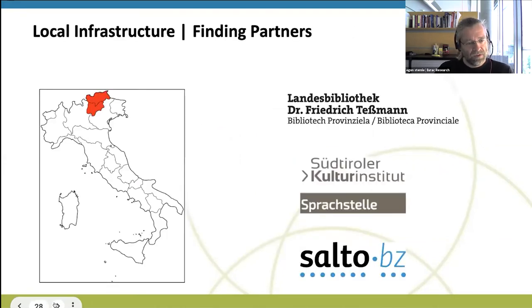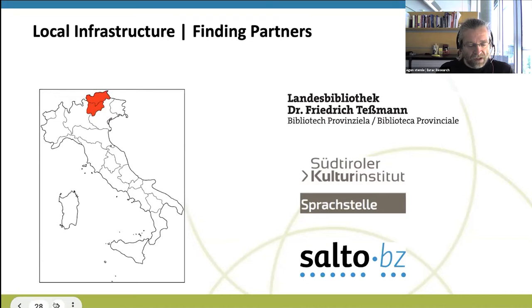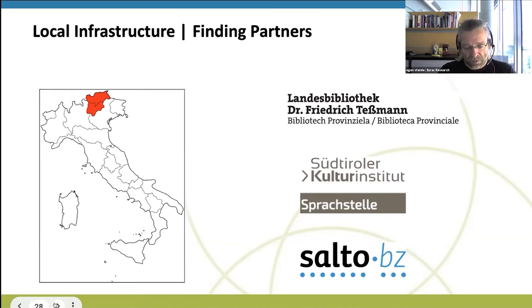In South Tyrol, a part of Italy in the far north, besides Italian, there is also a variety of German spoken, and a small part of the population speaks Ladin. They approached local partners for digital humanities activities and, after some back and forth, found three partners: the local library mainly responsible for German texts, the local cultural institute, and a newspaper portal called Salto. The presentation mainly focuses on work carried out with the newspaper portal.